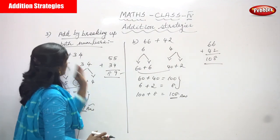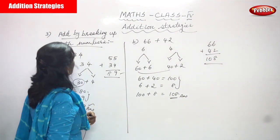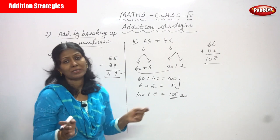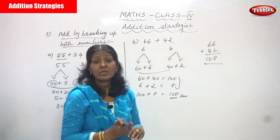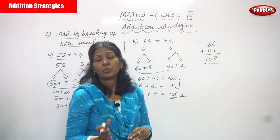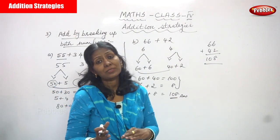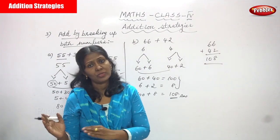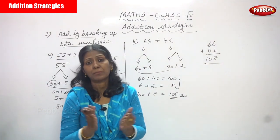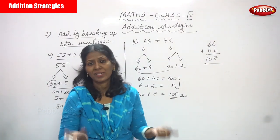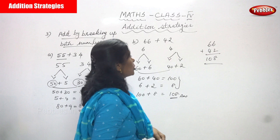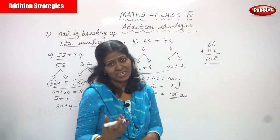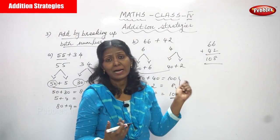The strategy we are following is: add by breaking up both numbers. First you add the tens, then you add the ones, then finally you combine them together to get the answer.